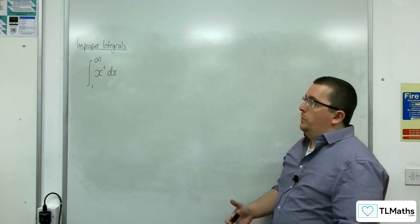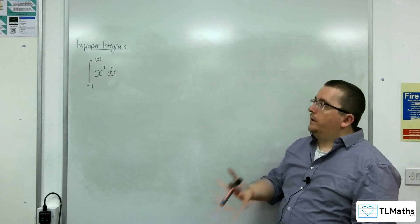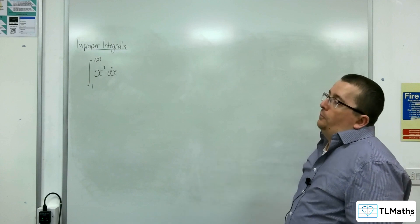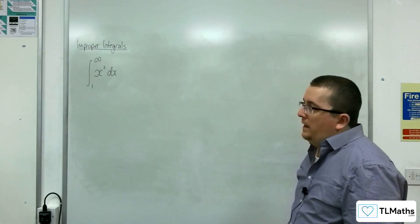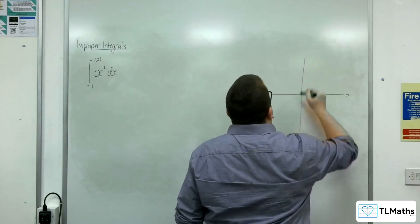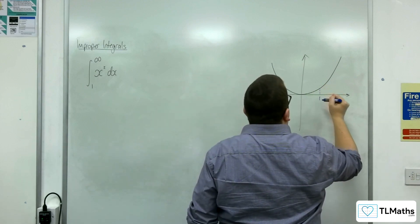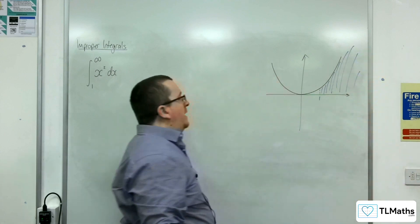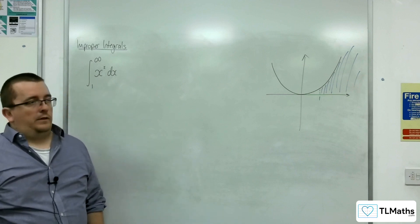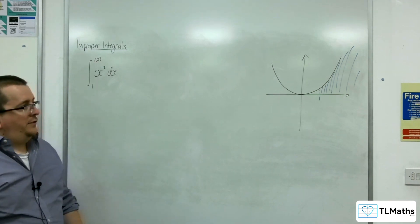The first example I'm going to go through to introduce improper integrals — some of you may think, why is Jack doing that? Because that seems blatantly obvious what the answer is going to be. I'm going to be integrating x squared with respect to x between 1 and infinity. We should know what x squared looks like: between 1 and infinity, that region is clearly going to be divergent — there's no cap on that area, so it definitely diverges to infinity.